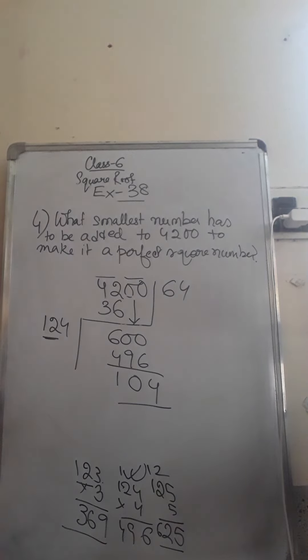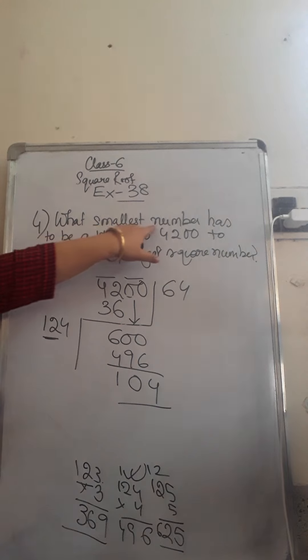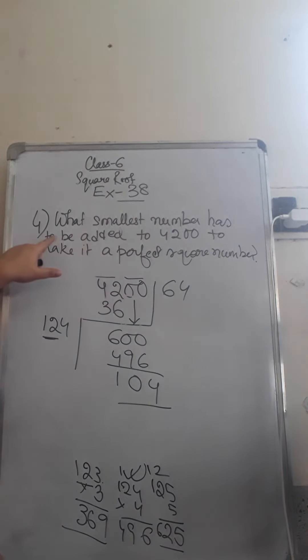Now the question over here is like the previous sum because here you need to find the smallest number. But there is a difference in the question that has to be added. If the question was what should be subtracted, then 104, the remainder has to be subtracted to get the next perfect square number or to get the nearest perfect square number. But here the question is added. So the technique will be different. What you have to do? How to find what should be added?